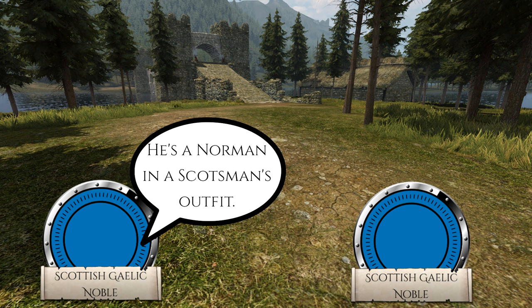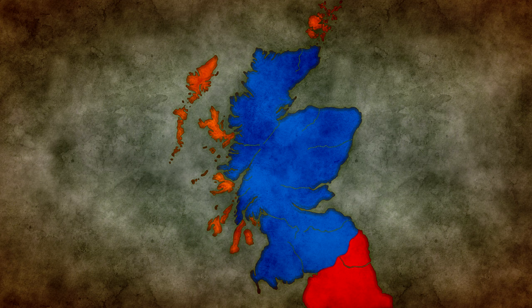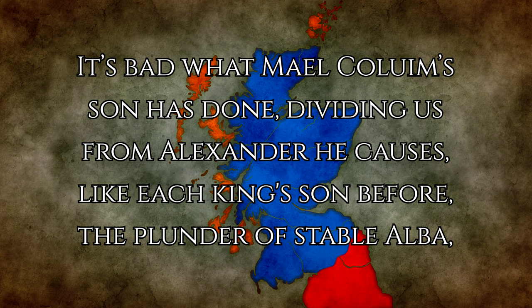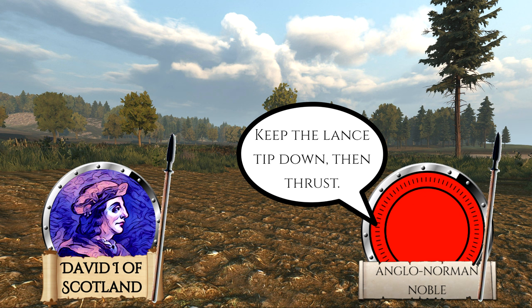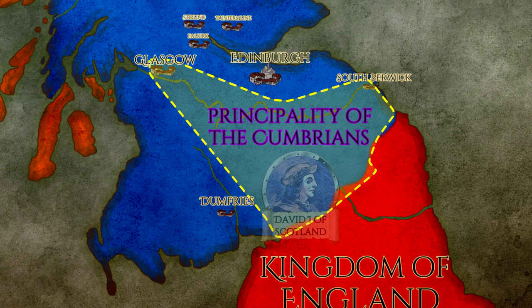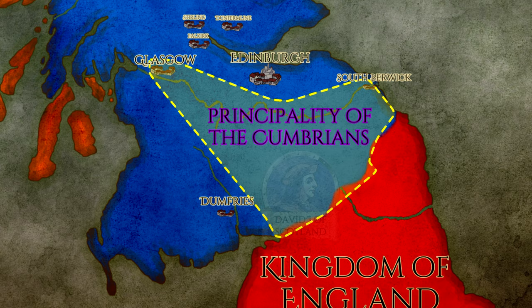David's rapid rise to power in Scotland and England was not well met by everyone. There is a poem from the time period that reads: 'It's bad what Malcolm's son has done. Dividing us from Alexander, he causes, like each king's sons before, the plunder of stable Alba.' Like his elder brother Duncan, the Gaelic elite were not happy that David, who was incorporated into the Anglo-Norman culture which they saw as foreign, now held significant power and land in Scotland, and was now known as the Prince of the Cumbrians and Earl of Huntingdon. David also now had lands in the Midlands of England.